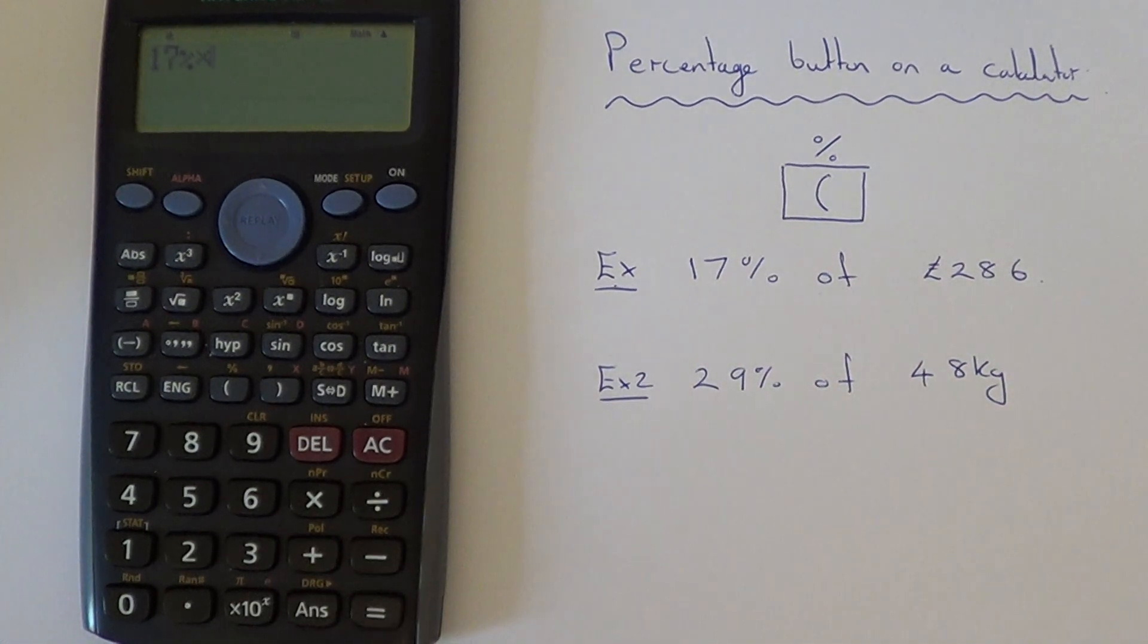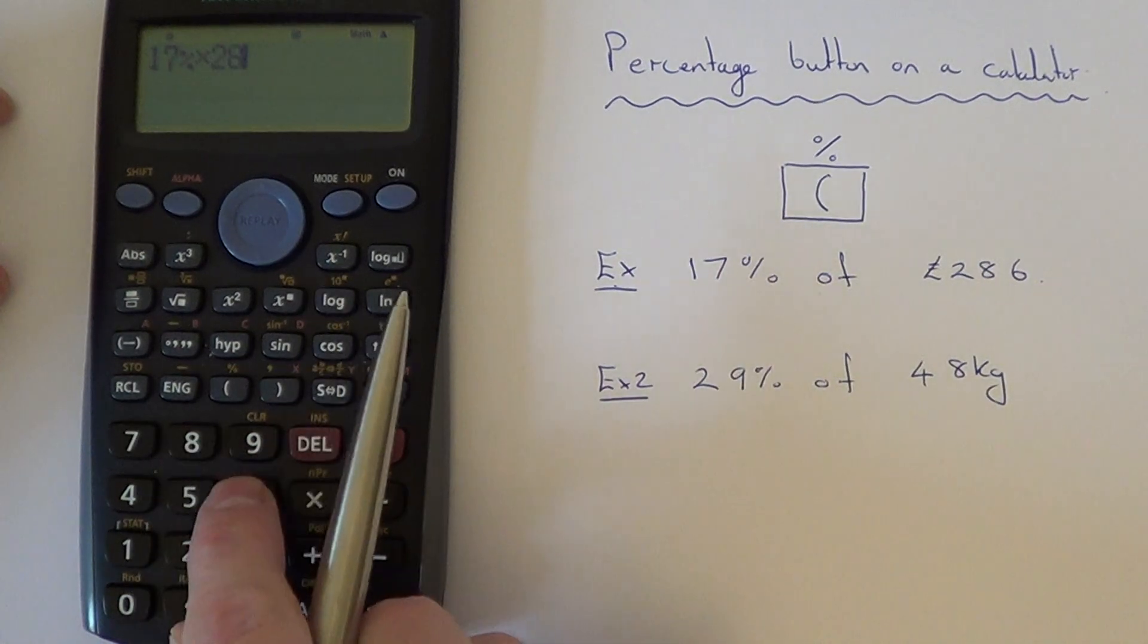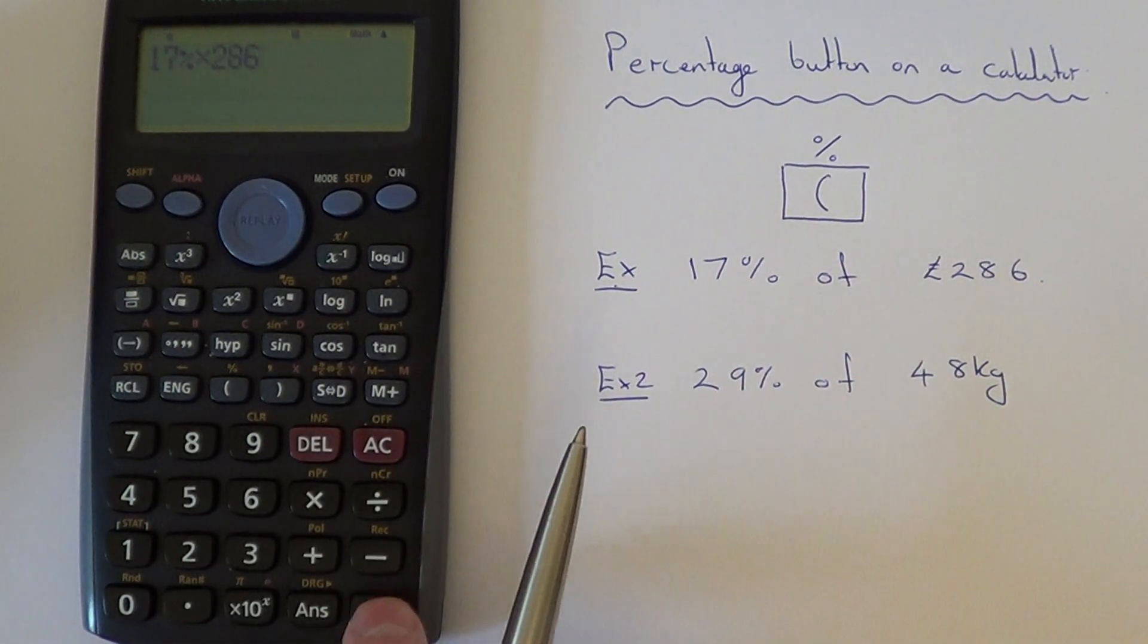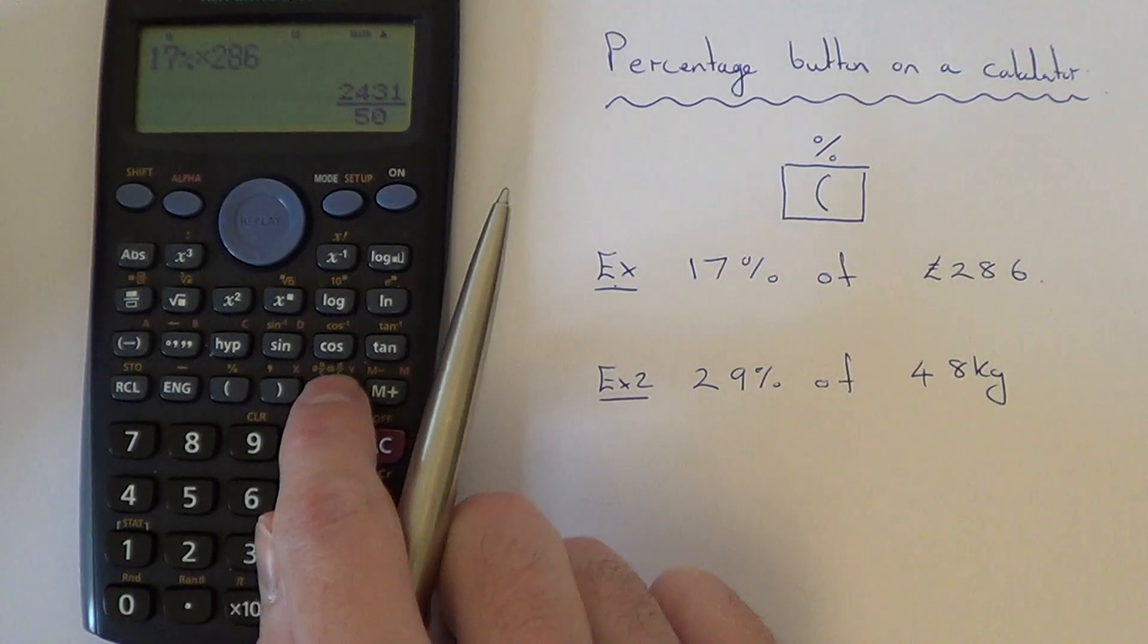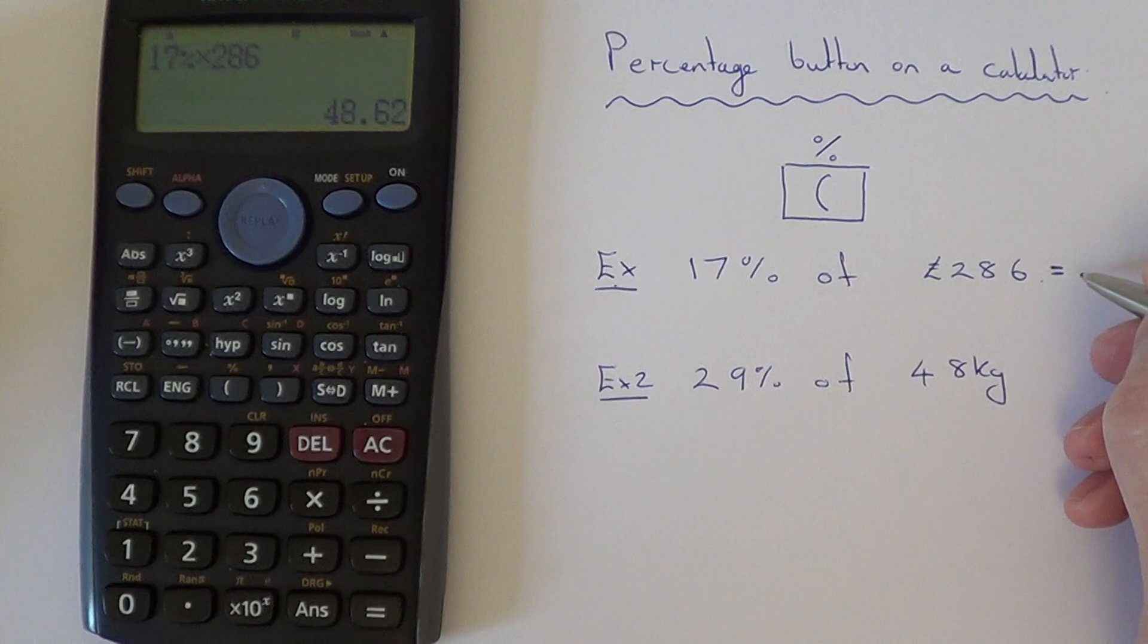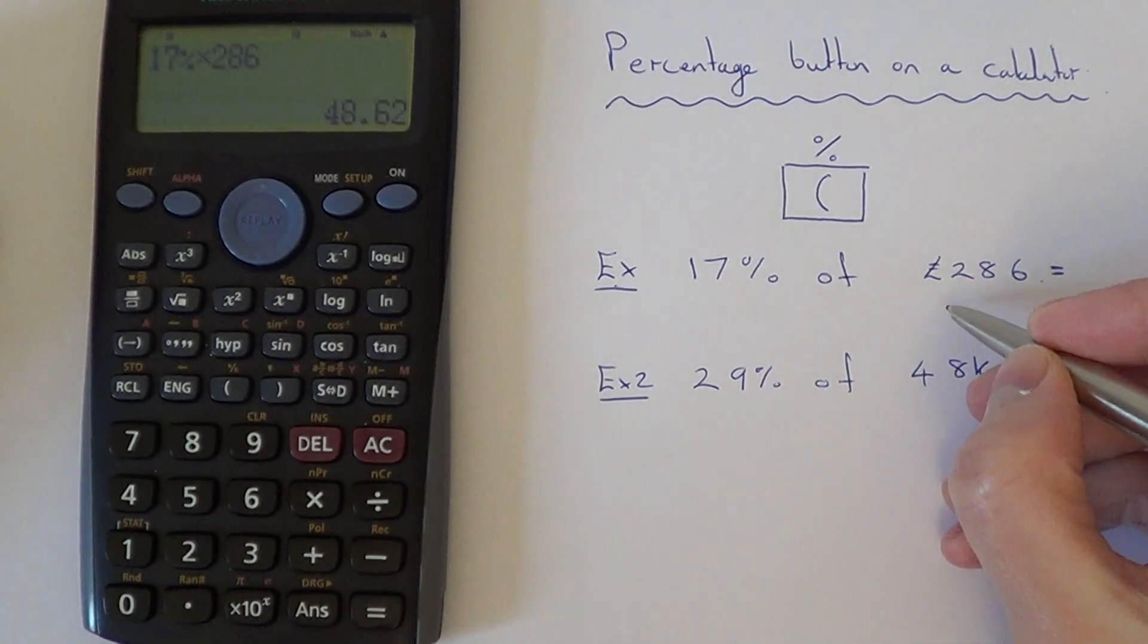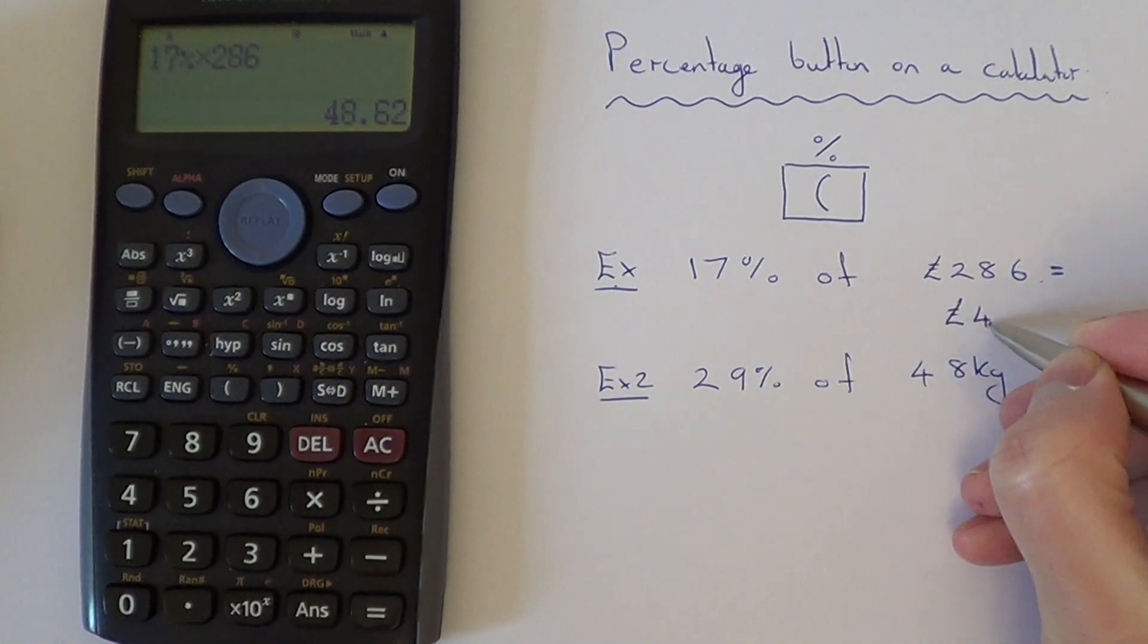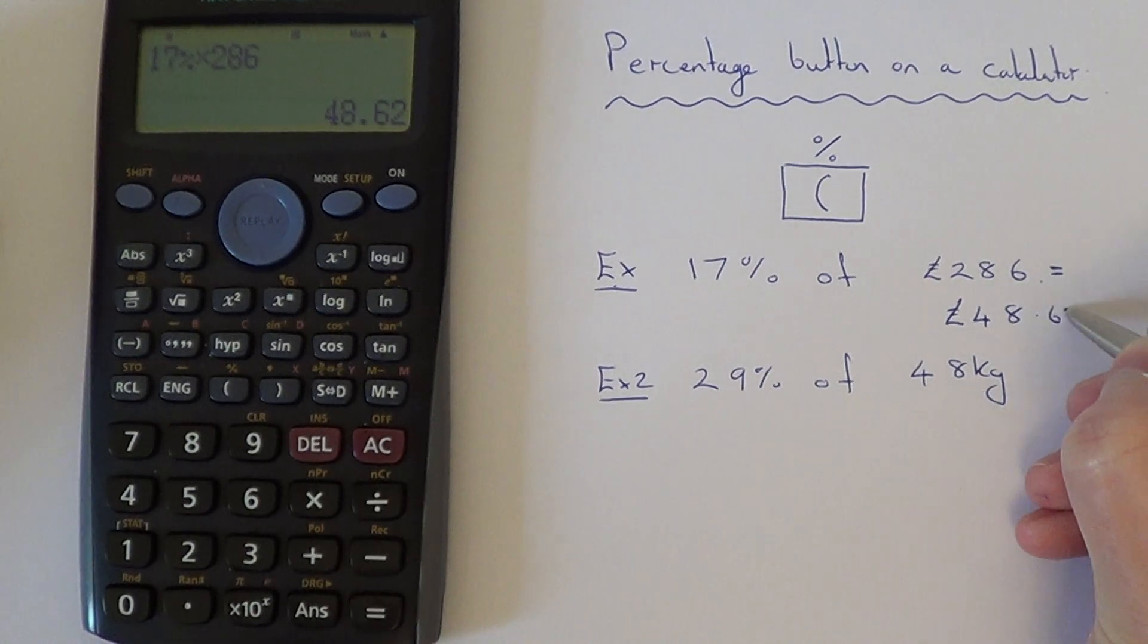The times sign means 'of', and then you type in the amount, which is 286. Hit your equals key and then SD it, and that will give you an answer of £48.62.